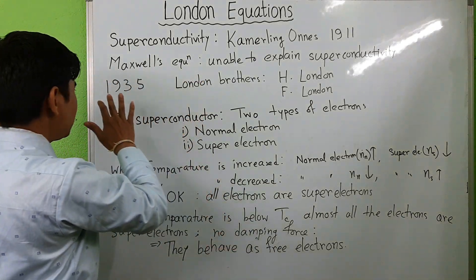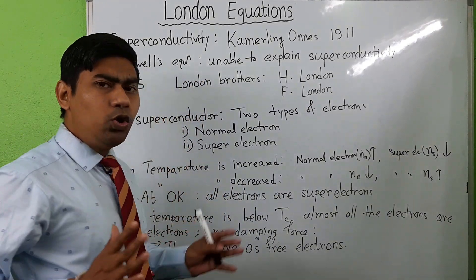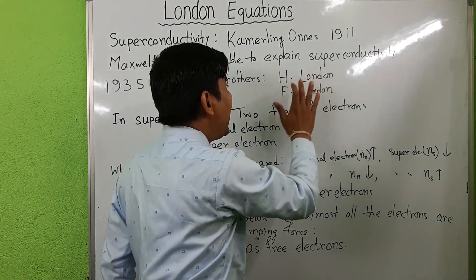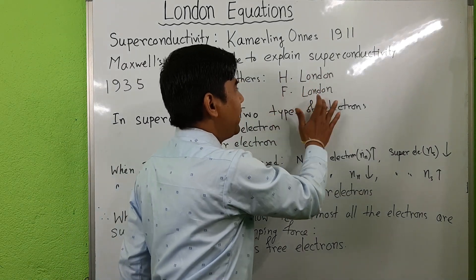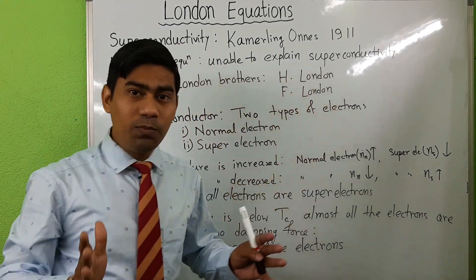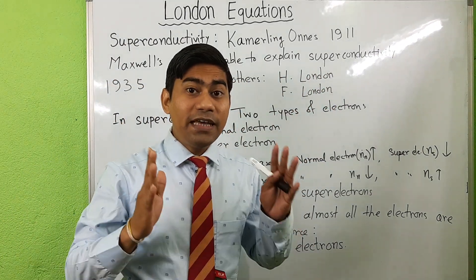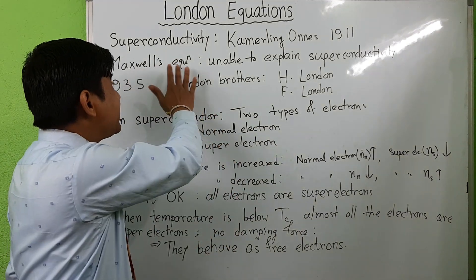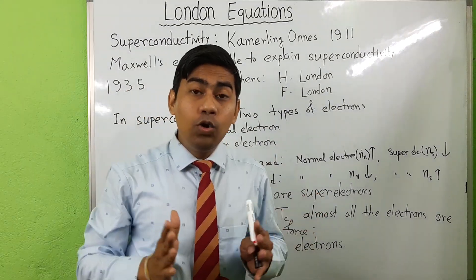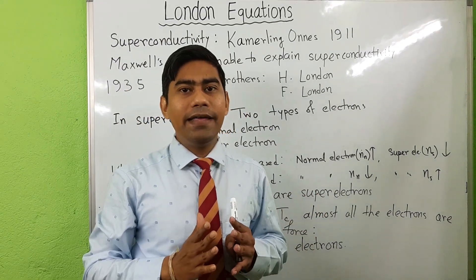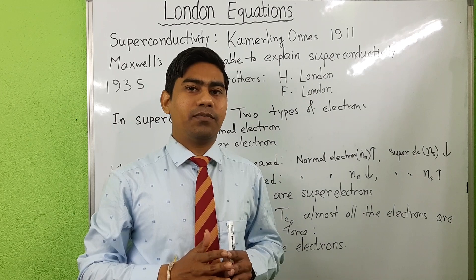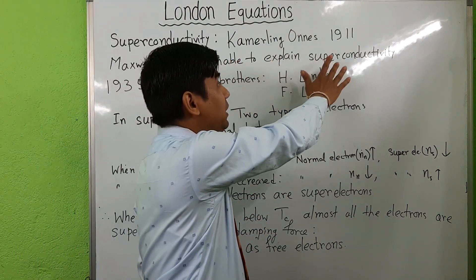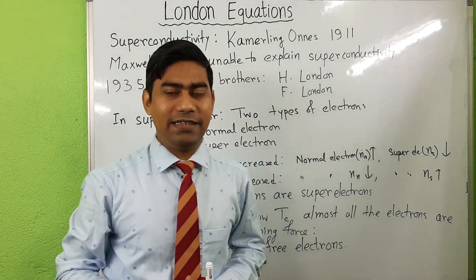In 1935, two London brothers, H. London and F. London, solved this problem. They modified Maxwell's equations and gave two London equations, and explained the superconductivity property very nicely.